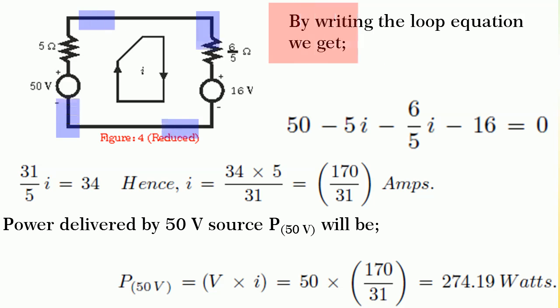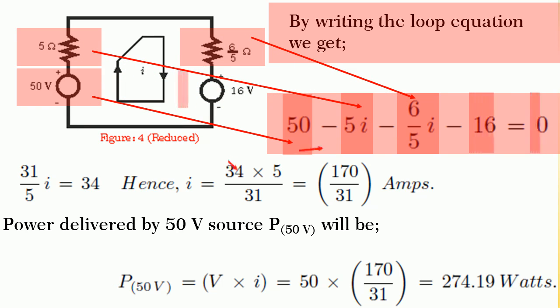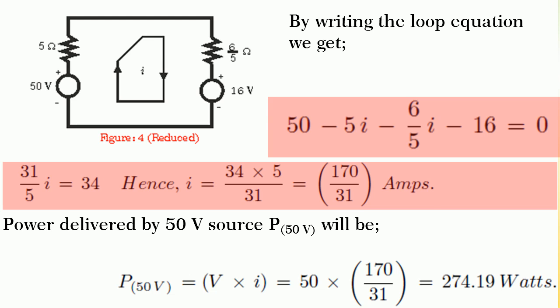Therefore, by writing the Kirchhoff's voltage equation for the loop, we get 50 minus 5i minus 6 divided by 5i minus 16 is equal to 0. By solving this simple equation, we get i is equal to 170 divided by 31 amperes.